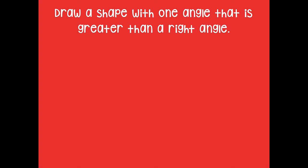Now I want you to draw a shape where at least one of the angles is greater than a right angle. If you need your right angle tool, you can use it. One of the sides out of all the sides has to be greater than a right angle. Go ahead and pause the video, draw one shape, and then click play when you're ready to see what I drew, and we'll see if we drew the same one.